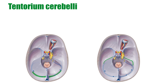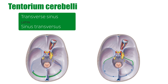The posterior margin separates into the two layers of the dura mater posterolaterally and contains the transverse sinus, highlighted here in green on the image to the left. At its anterolateral margin, the Tentorium cerebelli is attached to the superior border of the petrous part of the temporal bone and encloses the superior petrosal sinus, shown in green on the image to the right.